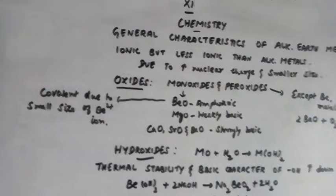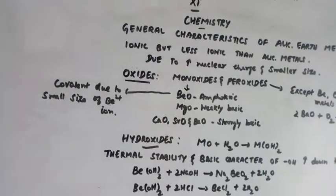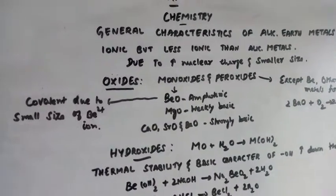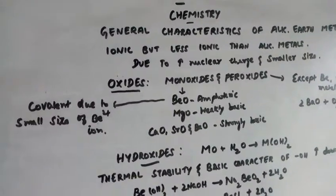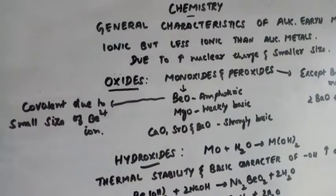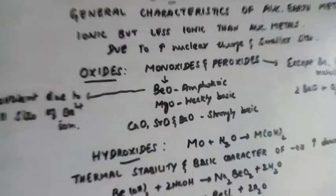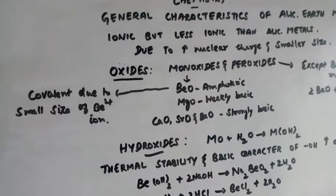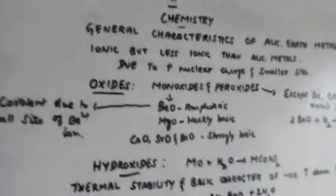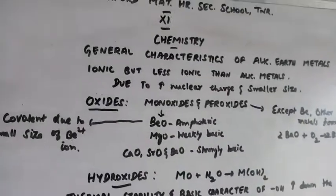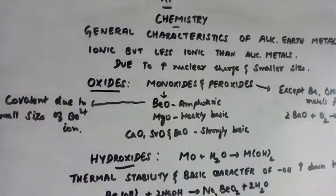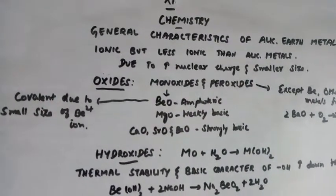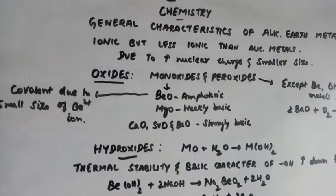Now let us see oxides. When we talk about alkaline earth metals, they generally form monoxides and peroxides. Except beryllium, other alkaline earth metals form peroxides. Beryllium alone will not form peroxides.